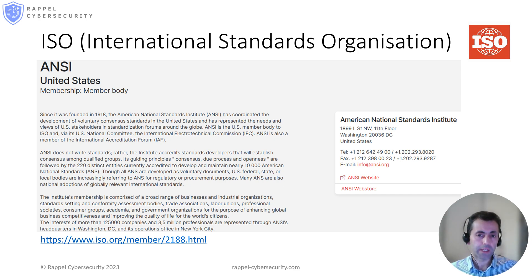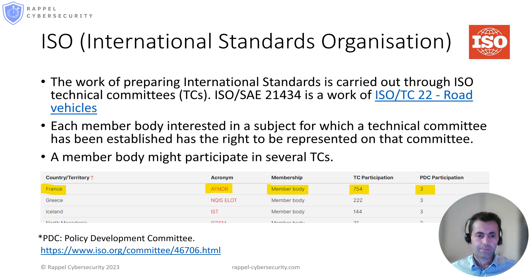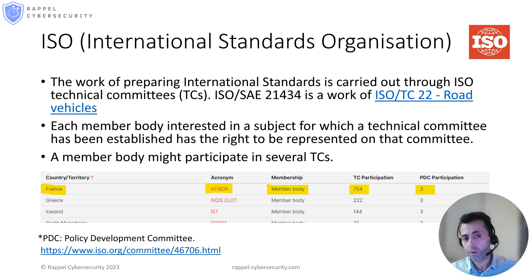The member body of the US in ISO is ANSI, which is the American National Standards Institute. We can say that ANSI is the legal seat of SAE in ISO, so it plays an important role in the collaboration between ISO and SAE that we will see in the upcoming slides. Standards are prepared by technical committees, and ISO SAE 21434 is a work of technical committee 22, road vehicles. Member bodies can participate in several committees in parallel. For example, France participates in 754 technical committees at the same time. For further information about ISO commissions, I recommend you consult the link at the bottom of the page. Note that certain information is only accessible by members.